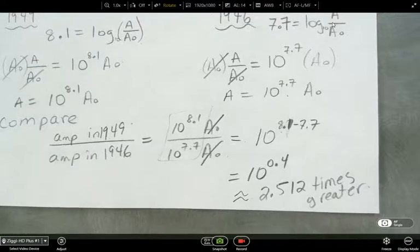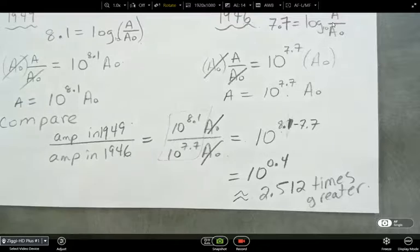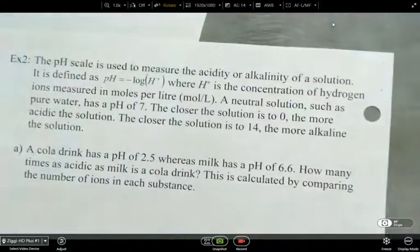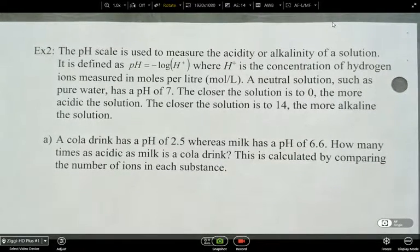The next question, example two, it says stuff about the pH scale. So we're looking at the pH scale, how it's used to measure acidity or alkalinity of a solution. It's defined as pH equals negative log H plus, where H plus is the concentration of hydrogen ions, and it's measured in moles per liter. A neutral solution, such as pure water, has a pH of 7. The closer the solution is to 0, the more acidic the solution is. The closer the solution is to 14, the more alkaline it is.